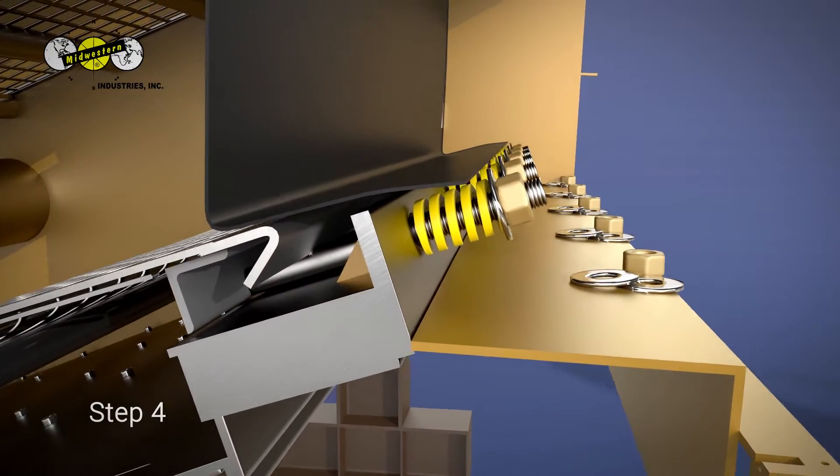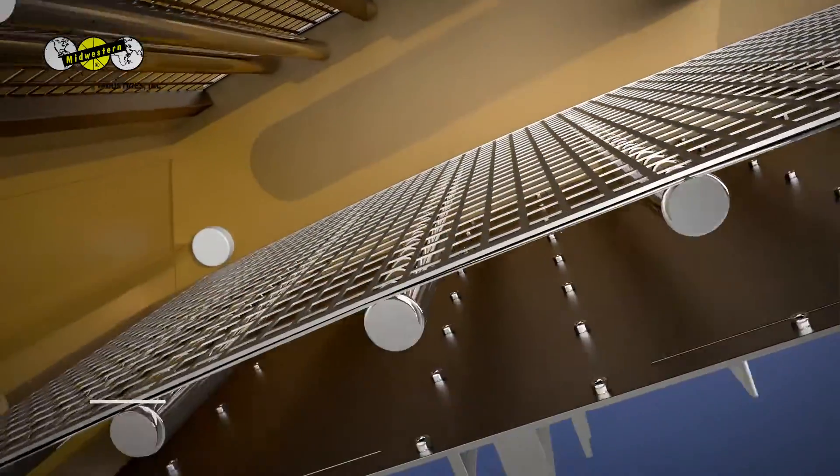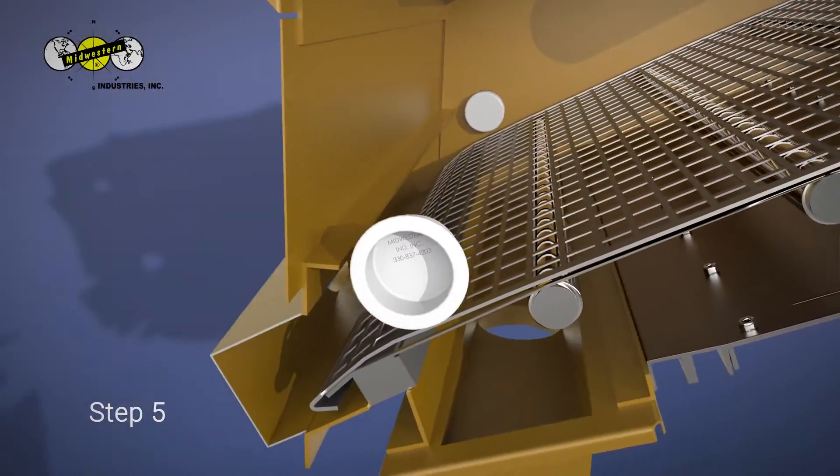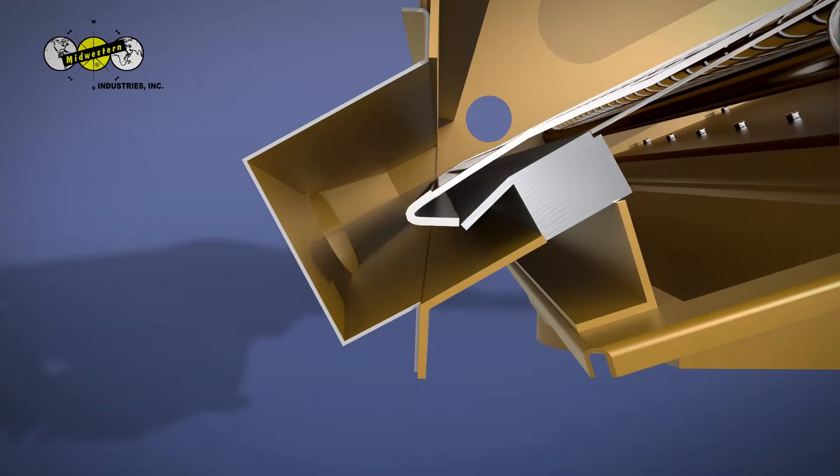Step 4: Push the drawbar forward to unhook the screen. Step 5: Remove the inspection ports on the screen deck that is being changed, then unhook the screen panel from the fixed tension lip.